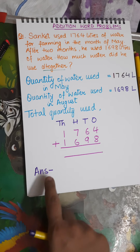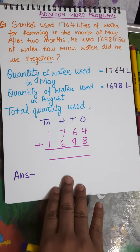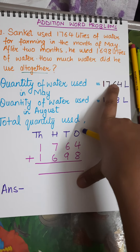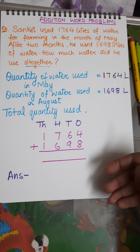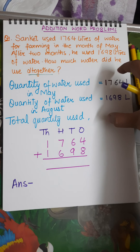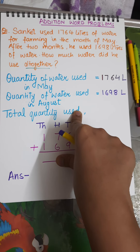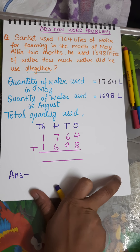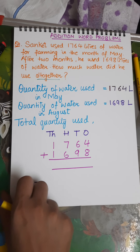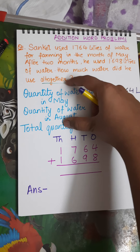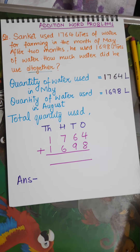Most importantly in a word problem — the answer statement. Without the answer statement, the word problem is incomplete. When your teacher gives a word problem in a paper worth three marks, the marks are divided: the statements may be worth one mark, the calculation one and a half marks, and half a mark is reserved for the answer statement. So don't lose easy marks — always write your answer statement.